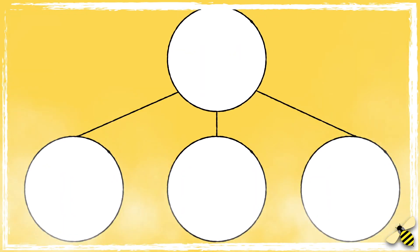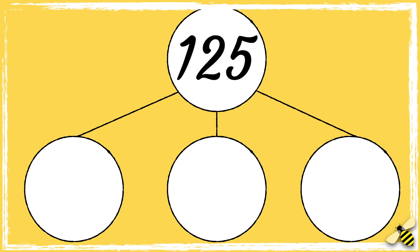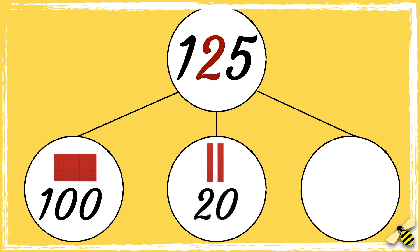Another way of showing hundreds, tens and ones in a number is by using a part-whole model. One hundred and twenty-five has one hundred, two tens, and five ones.